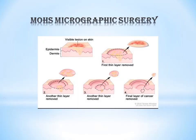This Mohs Surgery is also known as Mohs Micrographic Surgery — both are the same. Now first of all, I will explain what this procedure is with the help of one picture. This Mohs Micrographic Surgery procedure is performed in order to remove a visible lesion from the skin.